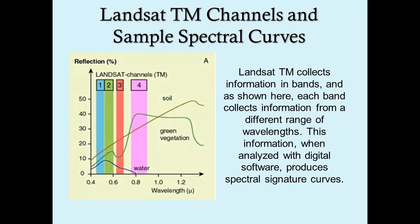The Landsat TM channels and sample spectral curves are shown here. We have bands one through four, and they are showing you the portions of the electromagnetic spectrum that they are collecting information from.